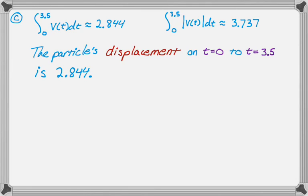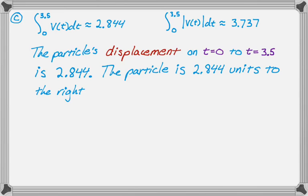And you might want to be more specific. I'm never really sure exactly what they're looking for. So you could also just say the particle is, so since the displacement is positive, the particle is 2.844 units to the right of where it started. So it's going to be to the right of where it started at t equals 0. So that's definitely the interpretation in the context of the problem.